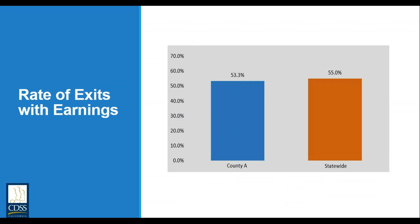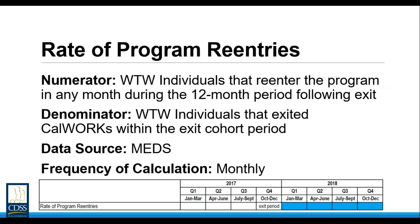Here you see an example of what the calculated rate looks like for County A and the statewide calculation. From October through December 2018, 53.3% of welfare-to-work individuals that exited CalWORKs had EDD-reported earnings in their quarter of exit — slightly below the statewide average of 55%.